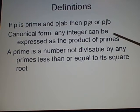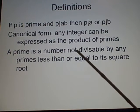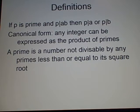Let's skip this one for a minute and go straight to this one. A prime is a number not divisible by any primes less than or equal to its square root. This is a useful fact to know if you're proving something's prime, so you don't have to go all the way up every number.